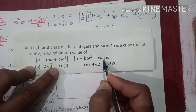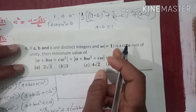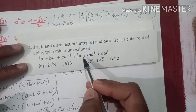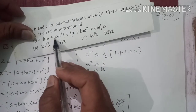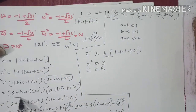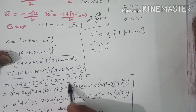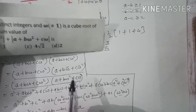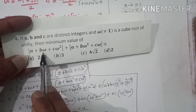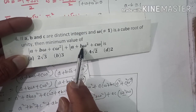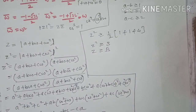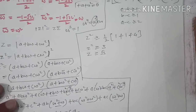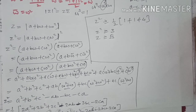اگر دوسرے حصے کے لیے بھی solve کریں تو وہ بھی √3 ہی آئے گا، کیونکہ جب ہم نے z کو solve کیا تھا تو دوسرا حصہ بھی اسی expression کا conjugate ہے۔ تو √3 + √3 = 2√3 یہ ہمارا final answer ہے۔ اگر solution سمجھ میں آیا ہو تو video کو like کریں اور channel کو subscribe کریں۔ Thank you so much.